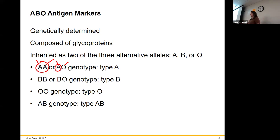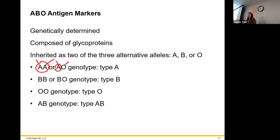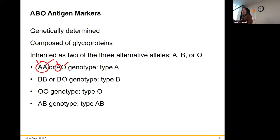O is the universal donor because everybody has that base — anybody can receive it. If you have blood type A, you automatically have anti-B antibodies — to you, B looks foreign. If you have blood type B, you have anti-A antibodies. If you have both A and B at the same time, they're both expressed equally, so you have AB.